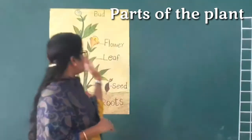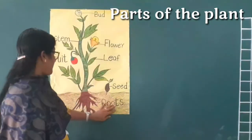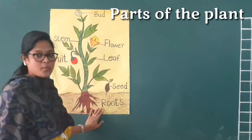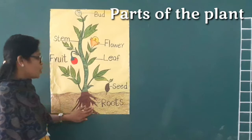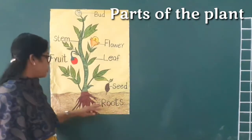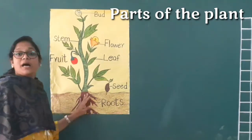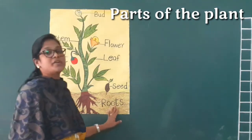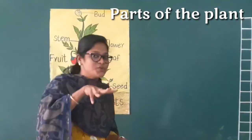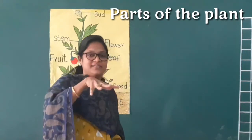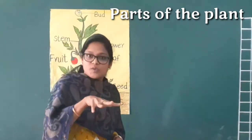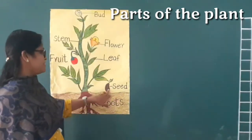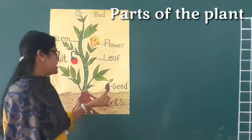I hope you all can see the picture of a plant and I have marked the parts here, so I'll explain them one by one. This bottom part of the plant is called the roots. To remember easily, you could do the action — keep your fingers like this and say 'roots, roots.'